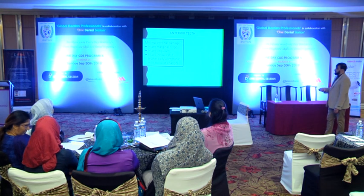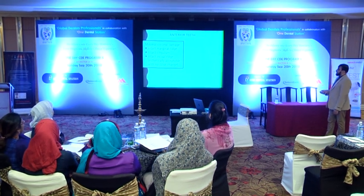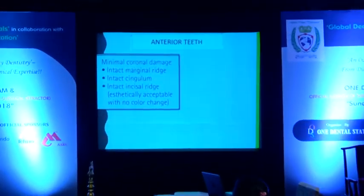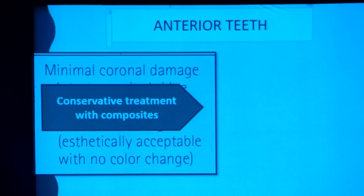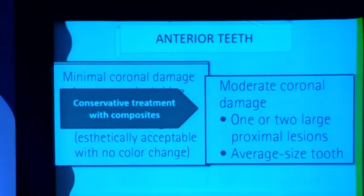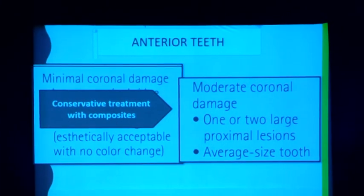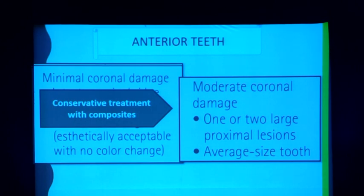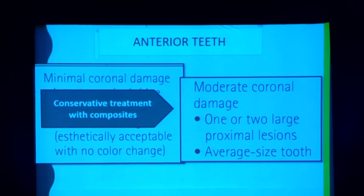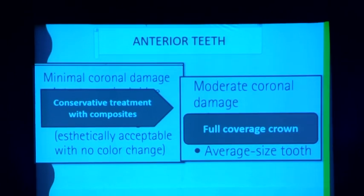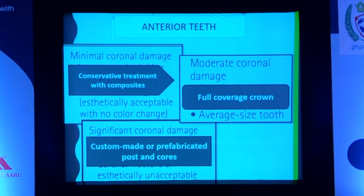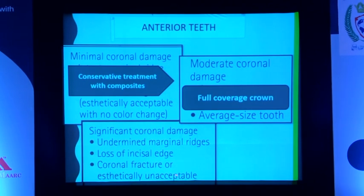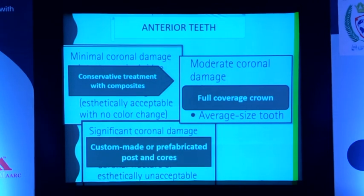If you get a tooth with intact marginal ridge, intact cingulum and incisal edge, and it is aesthetically acceptable, just do a conservative composite build-up. If you have moderate coronal damage — that is one or two large proximal lesions on an average-size tooth — then just go ahead and place a crown. If there is significant marginal ridge breakdown, incisal ridge gone, and the coronal fracture is aesthetically unacceptable, you will have to make either a custom or prefabricated post and then proceed with a crown.